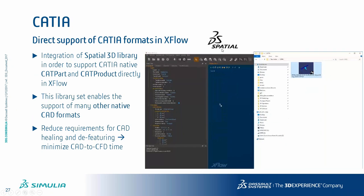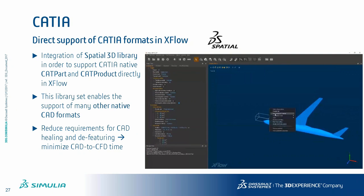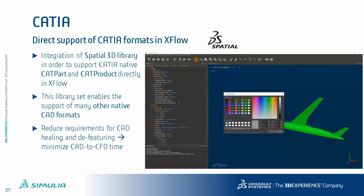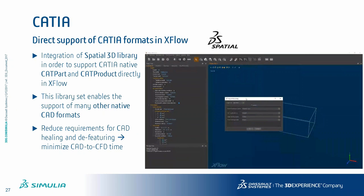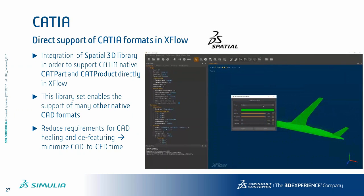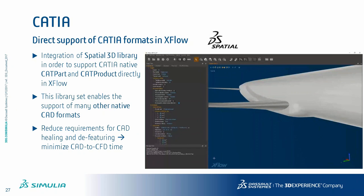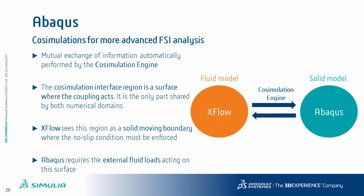For geometry integration, XFlow 2017X implements the DS spatial library, allowing CATIA CATPart and CATProduct files to be dragged and dropped directly into the XFlow GUI. XFlow reads the file and allows the user to select surface and edge quality, then creates the geometry — eliminating the need to export to an intermediate format. This significantly reduces the CAD-to-CFD time.